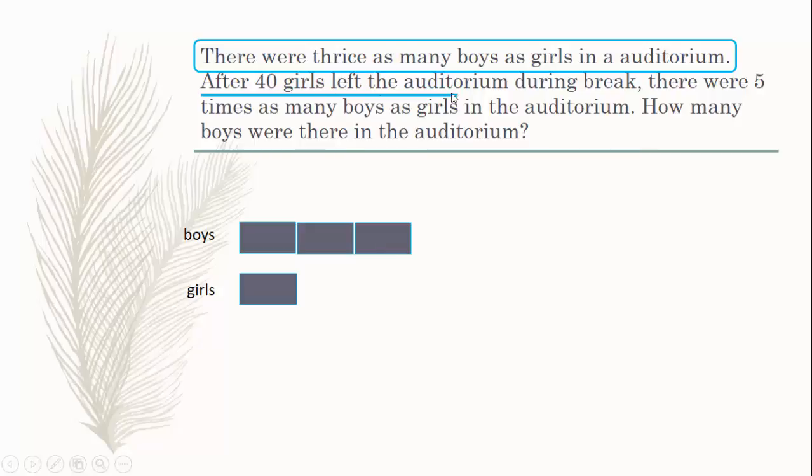After 40 girls left the auditorium, 40 girls left here and there is no change in the number of boys. If we consider boys and girls as two different quantities, one quantity is changing, which is the number of girls, but the other is not changing. If this is 40, there has to be a 40 in this unit also, and a 40 here and a 40 here as well. This marking is just for our own information; only this 40 is leaving the auditorium.